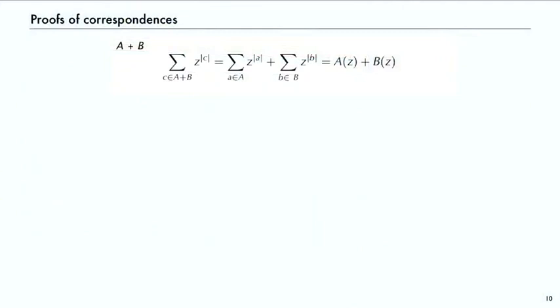Here's the proofs about the generating functions. For A + B, if you have an object that belongs to either A or B and you sum over all objects in A plus B, then you can split the sum into two parts, the ones from A and the ones from B. By definition, that gives you the sum of the two generating functions.